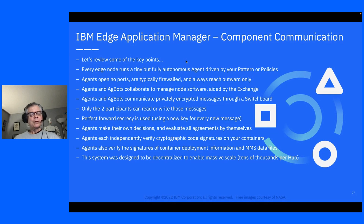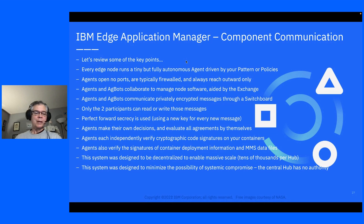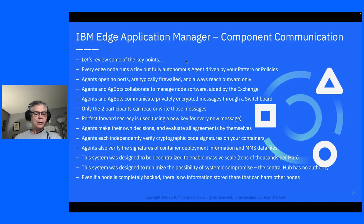The system was designed to be as decentralized as possible to enable massive scale — tens of thousands per hub — and to minimize the possibility of any kind of systemic compromise. The central hub has no authority over the agents; the agents make their own decisions. So even if a node is completely hacked, there's no information there that can harm any other nodes.